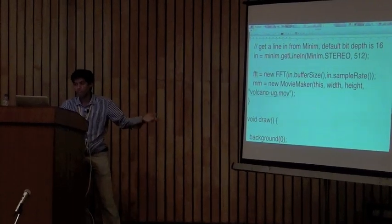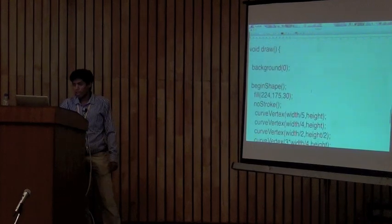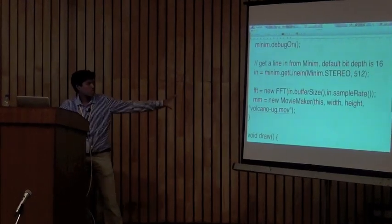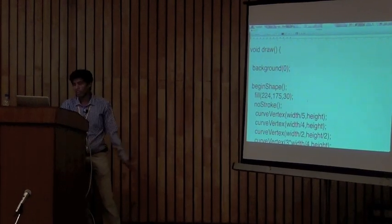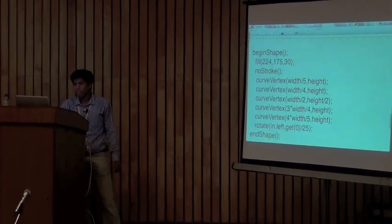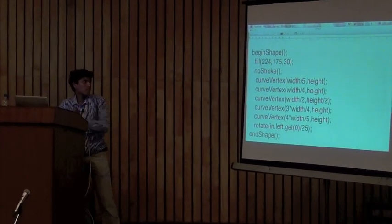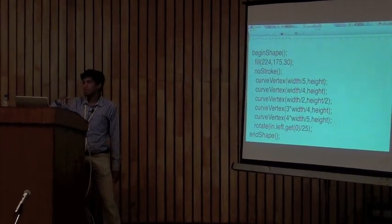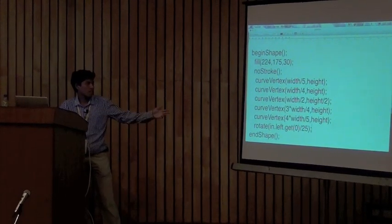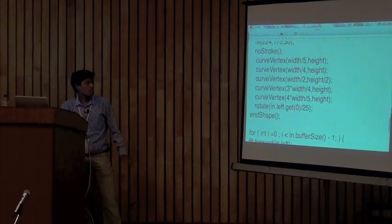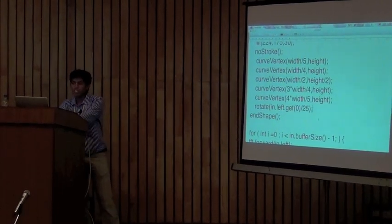FFT — Fast Fourier Transform — is used to sample the incoming signal and extract the frequency from the left channel. This covers the initialization. In the draw method, I've defined the background color and shape. The mountain is defined using a Bézier curve — a curve obtained by joining vertices — and I've placed each vertex and rotated it by a certain degree to get the vibration or shaking effect.